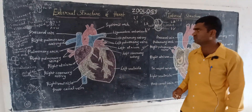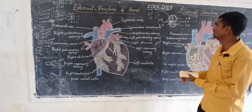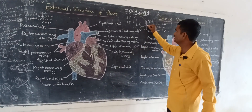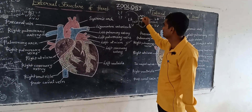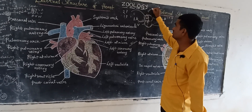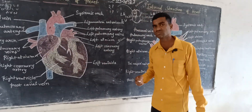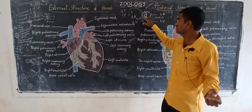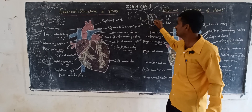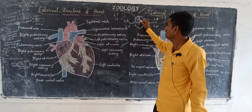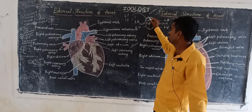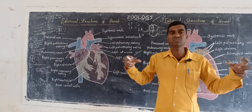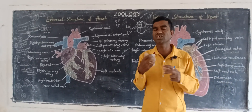Specialized nodal tissues are forming. The SAN node — sinoatrial node — is forming. The SAN node is called the pacemaker; it produces a lub-dub-like sound. The sinoatrial node is present on the right side of the atrium. The SAN is generating rhythmic contractions and rhythmic relaxations, which is why it produces the lub-dub sound.